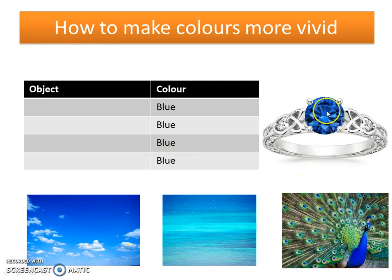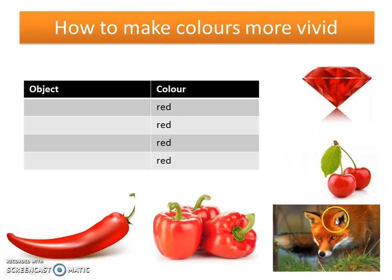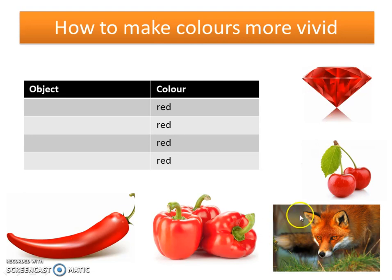The same technique works with other colours. For example: sapphire blue, peacock blue, ocean blue, sky blue; dolphin grey, pigeon grey, metallic grey, space grey; ruby red, cherry red, fox red, pepper red, chilli red. The colours are quite different — ruby is rich, fox is orangey, cherry is a blue-tone red (a deeper red), and pepper is a fiery red. Placing a noun before a colour is a really good way of making your descriptions vivid.